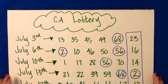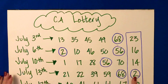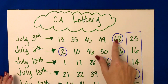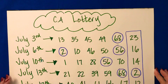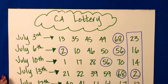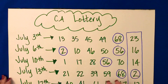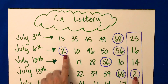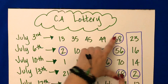So the mode for this set of data is 2, 56, and 68. Now sometimes there can be two modes. Sometimes there can be three modes, as long as the numbers are tied with how many times they show up.